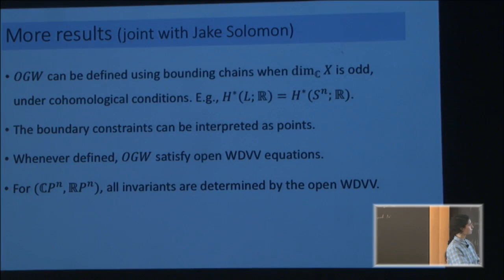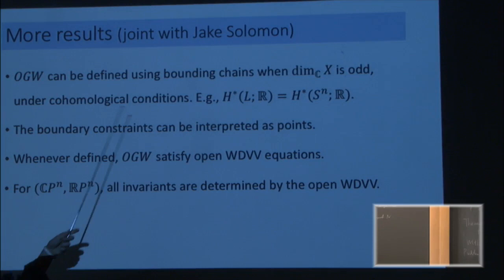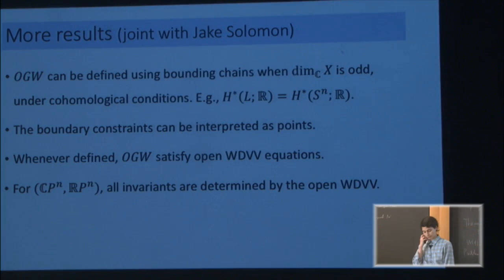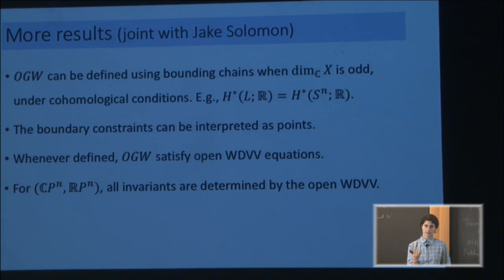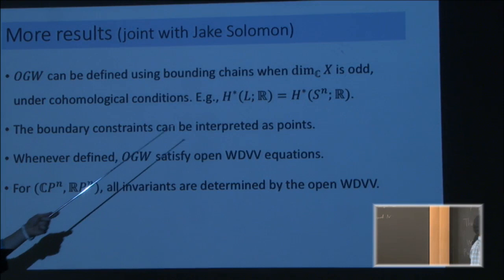We do manage to use this to define some sort of invariants. The obstructions — we don't use any group actions; instead we try to understand the space of these bounding chains, which depends more on cohomology. For example, in the case where L is a rational homology sphere, we have a complete classification, and in that case you can interpret the resulting invariants as counting stuff with point constraints at the boundary. I can't get arbitrary constraints at the boundary, just point constraints, but I can do this in any dimension. The paper is already on archive.